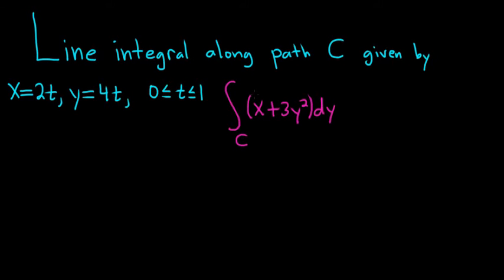In this problem we're going to evaluate a line integral along the path C given by x equals 2t, y equals 4t as t runs from 0 to 1. This line integral is given in differential form. It's missing a dx, but no big deal. Pretty simple problem. So let's do it.